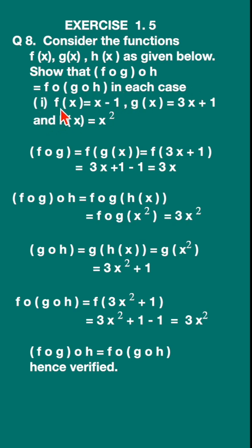The first sum is f(x) = x - 1, g(x) = 3x + 1, and h(x) = x². These are the functions and we have to show that (f∘g)∘h is equal to f∘(g∘h).